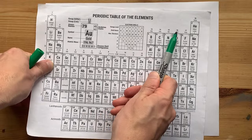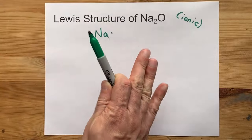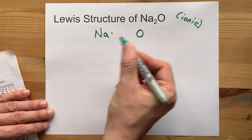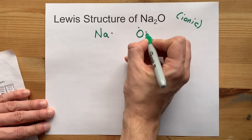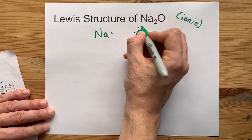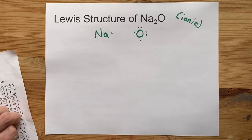Oxygen in group 16 brings 6 valence electrons with it. See how there's a 6 in 16? That's how I remember it. 1, 2, 3, 4, 5, 6 valence electrons.